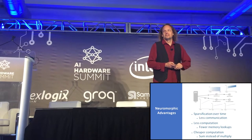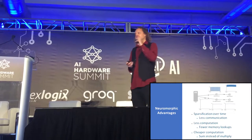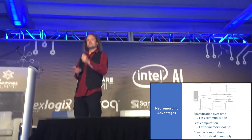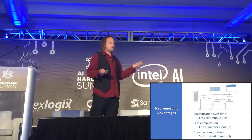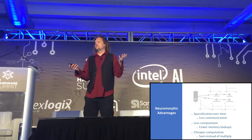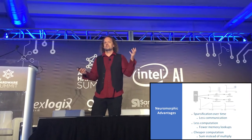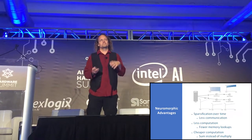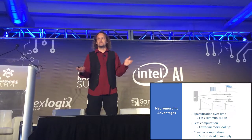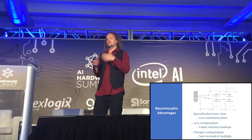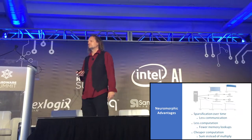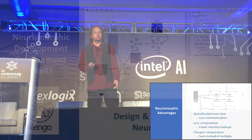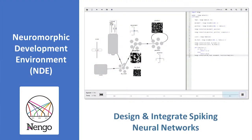So in theory we should be able to get these kinds of advantages. But you might be thinking: how could I even take advantage of this, because I want to build big models, deep neural networks, and so on — how am I going to do that with spiking neurons? This brings me to the first product from ABR that I want to talk about. This is called NENGO. It's a neuromorphic development environment.